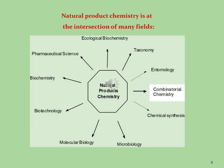Natural product chemistry is at the intersection of many fields, including ecological biochemistry, taxonomy, entomology, combinatorial chemistry, chemical synthesis, microbiology, molecular biology, biotechnology, biochemistry, and pharmaceutical sciences. All these fields interlink with natural product chemistry.